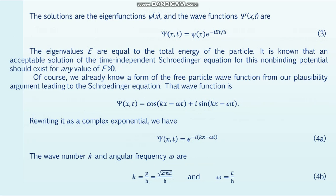An acceptable solution of the time-independent Schrödinger equation for this non-binding potential should exist for any value of E greater than zero. We already know a form of the free particle wave function from the plausibility argument leading to the Schrödinger equation. That wave function is ψ(x,t) equals cosine(kx − ωt) + i·sine(kx − ωt). Rewriting it as a complex exponential gives formula (a). The wave number k and angular frequency ω are given by formula (b).